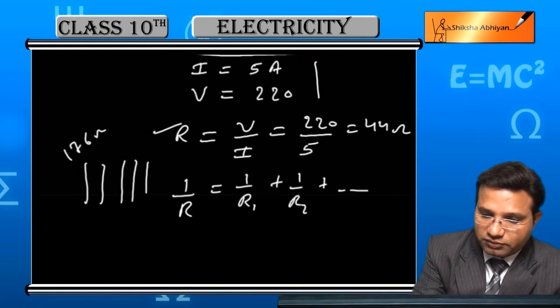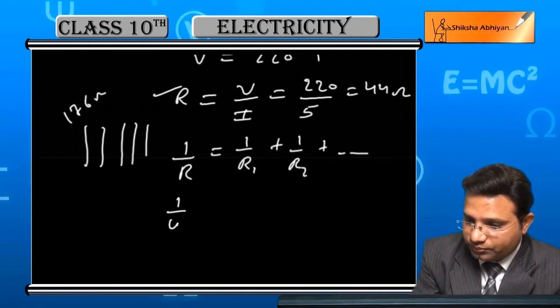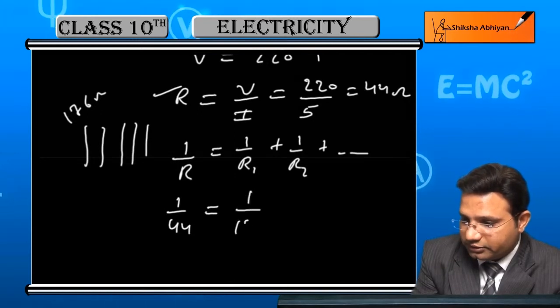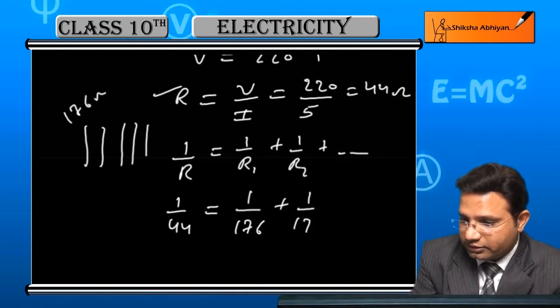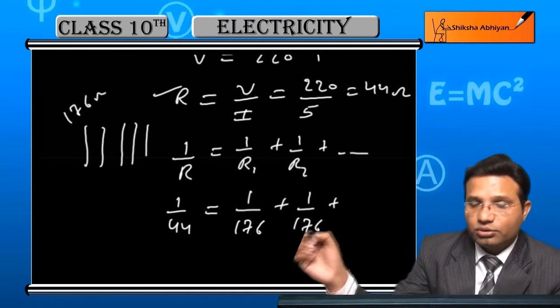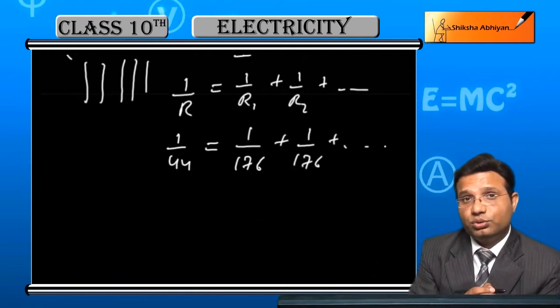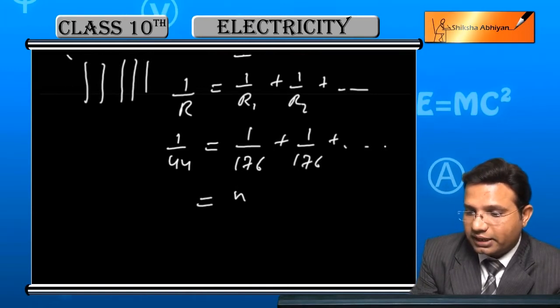First of all, we will put the values. So, R we have calculated as 44. R1 is 176, R2 is also 176, R3 is also 176 and so on. We exactly don't know the number. So, what we will do is we will assume the number as n.